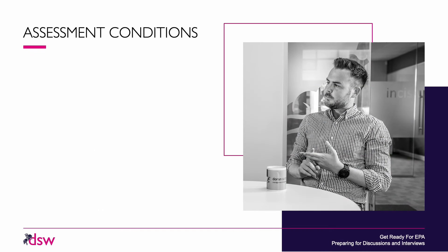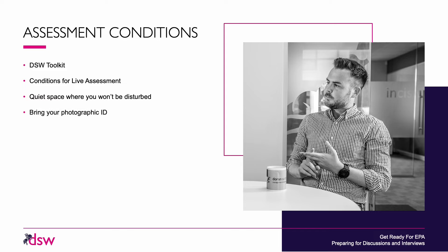So assessment conditions — everything you need to know is detailed in the DSW toolkit and conditions for live assessment. Your training provider has copies of both documents, so if you haven't seen them please get a copy and familiarise yourself with the requirements. You will need to be in a quiet space where you won't be disturbed — a room with no noise, no phones ringing, no people coming in. You will need to be on your own unless undertaking a panel interview. Bring your photographic ID and show it to the camera at the start of the session.